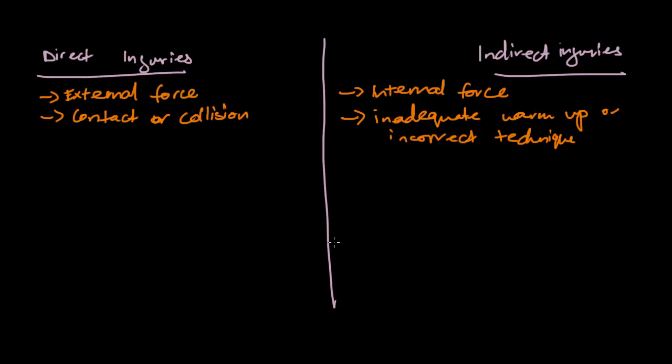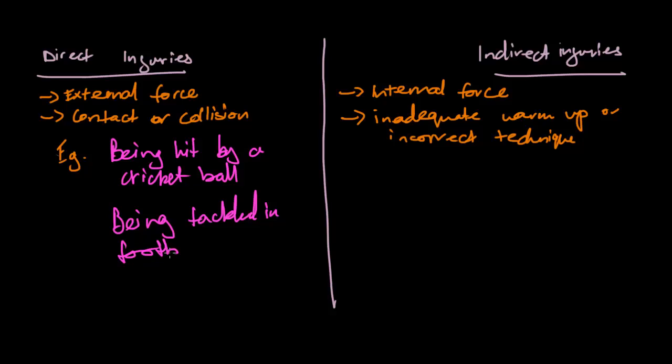So that's pretty much it. Now, what can I really say? So examples for direct injuries is, I'll just write them out. So being hit by cricket ball. Or being tackled in football. Okay. And now for this one, what examples are there? Now, as I said before, we've got sprinter tearing hamstring. Okay. So that's the two things that we can just tell from direct and indirect injuries.